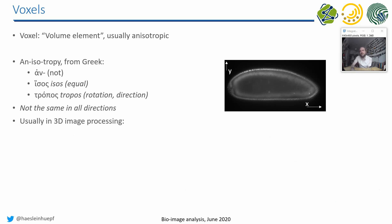If we talk about three-dimensional image processing, we have to talk about the volume element — the voxel. Voxels are usually anisotropic, and I would like to explain what that means in the context of voxels. When we look at an image in 2D, we usually have a coordinate system X and Y, and in most cases pixels have the same size in X and Y.